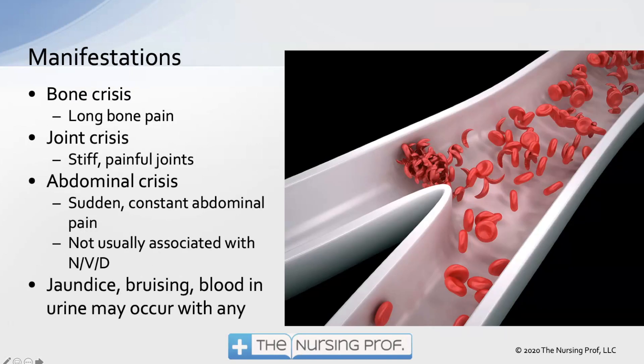Symptom-wise, pain is the number one presentation. Bone crisis is a very common type, presenting as long bone pain or stiff painful joints. We can also have an abdominal crisis — sudden, constant abdominal pain usually not associated with nausea, vomiting, or diarrhea, because it's not something happening in the GI system but to it. Essentially, an abdominal crisis represents a bowel infarction, causing sudden constant abdominal pain.